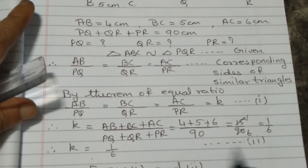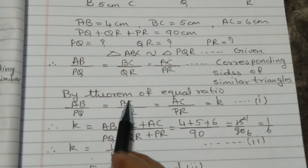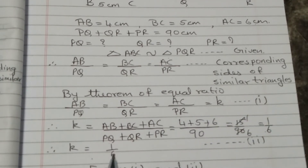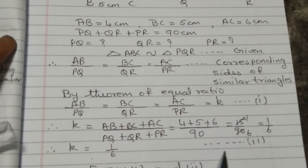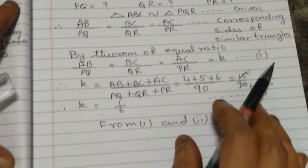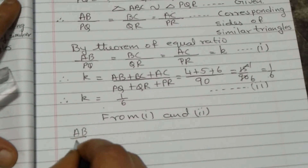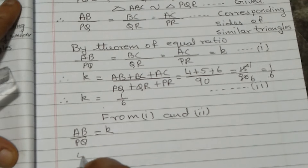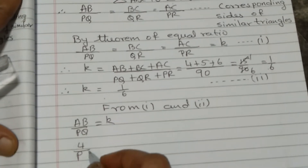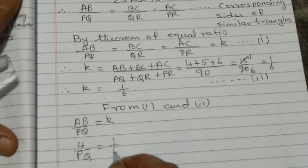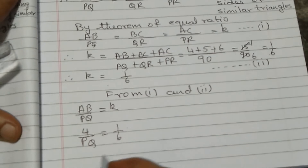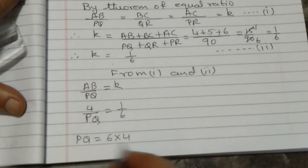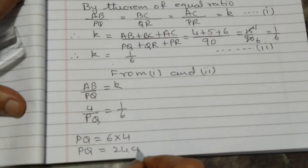From AB/PQ = k = 1/6: 4/PQ = 1/6, so PQ = 6 × 4 = 24 cm.